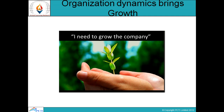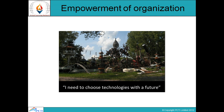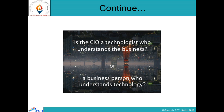Organization dynamics basically defines the parameters for improvement. It brings about growth inside the organization, and an organization says that it needs to grow the company through technology. For that purpose there should be proper empowerment of the organization. An organization can improve and enhance their profitability and their strengths across the world by choosing parameters like choosing technologies with the future in mind. The question is whether the CIO is a technologist who understands the business, or a business person who understands the technology — there is a big difference between these two statements.